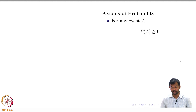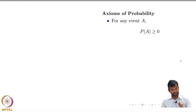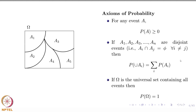Axioms of probability. For any event, we know that the probability of the event should be greater than or equal to 0, and if you have the universal set which contains all the events, the probability of the universal set is going to be 1. This is the basic axiom of probability.